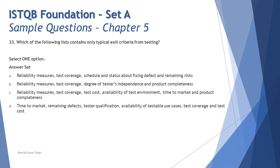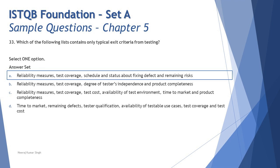Option D includes time to market, remaining defects, tester qualification, and availability of testable use cases. Tester qualification is not an attribute measured for entry or exit criteria - you may consider it to set up team composition, but not as a specific criterion. Availability of testable use cases is again entry criteria. This confirms the right answer is A: reliability measures, test coverage, schedule, and status about fixing defects and remaining risk as part of exit criteria. Read each word carefully in such questions.